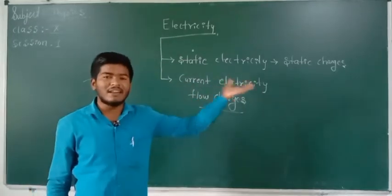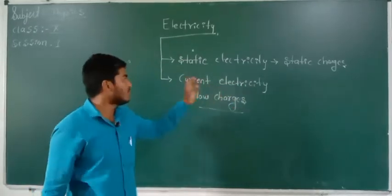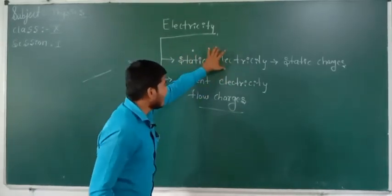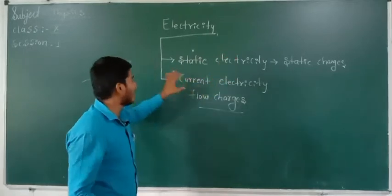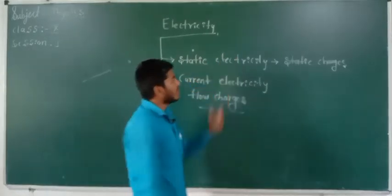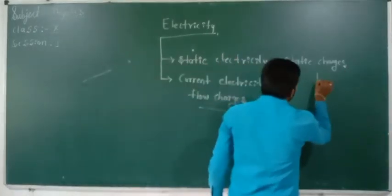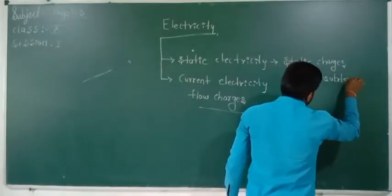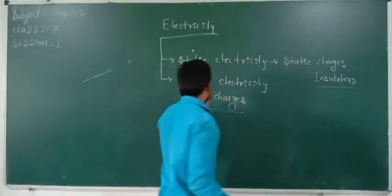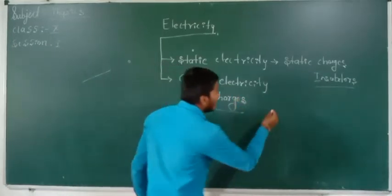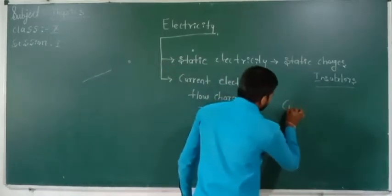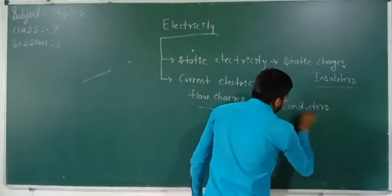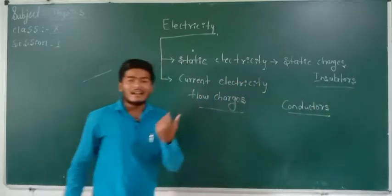What is current electricity and what does it deal with? We have to know the difference between static electricity and current electricity. Static electricity deals with insulators only, but current electricity deals with conductors.